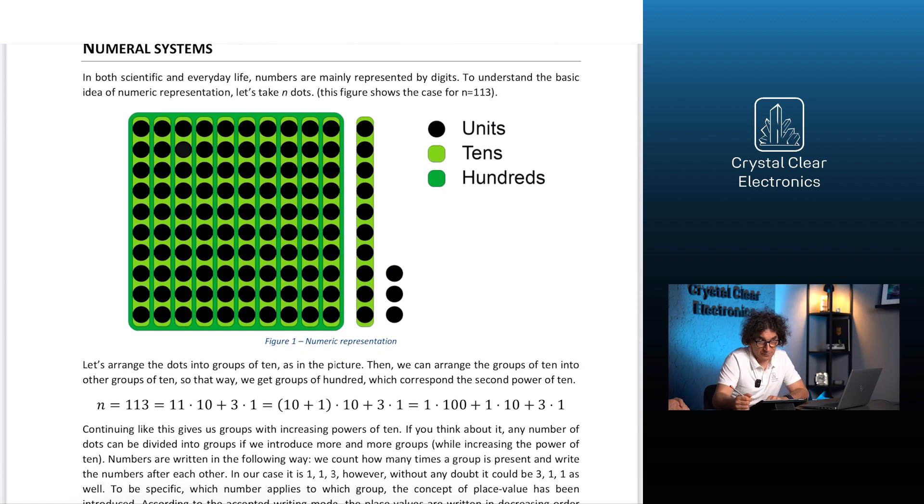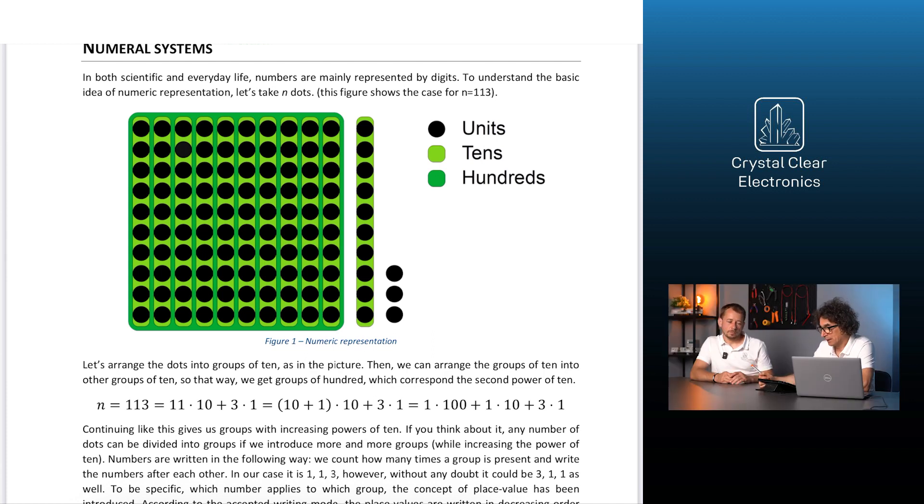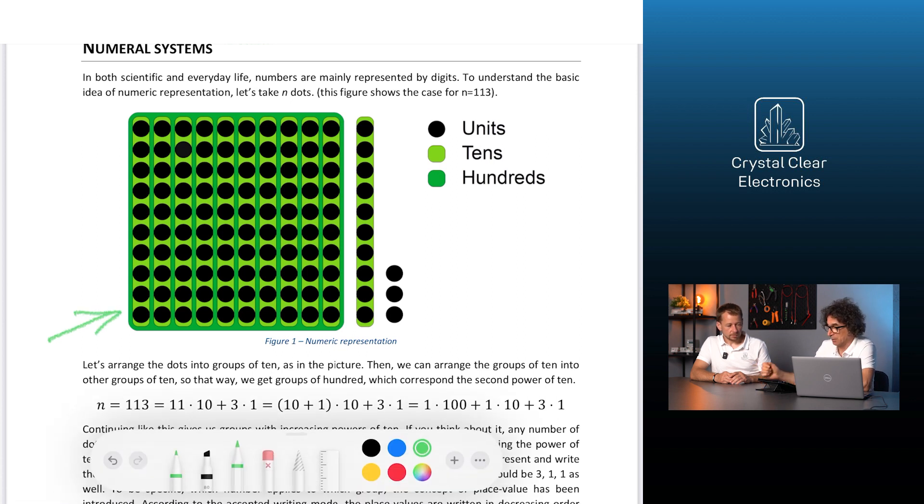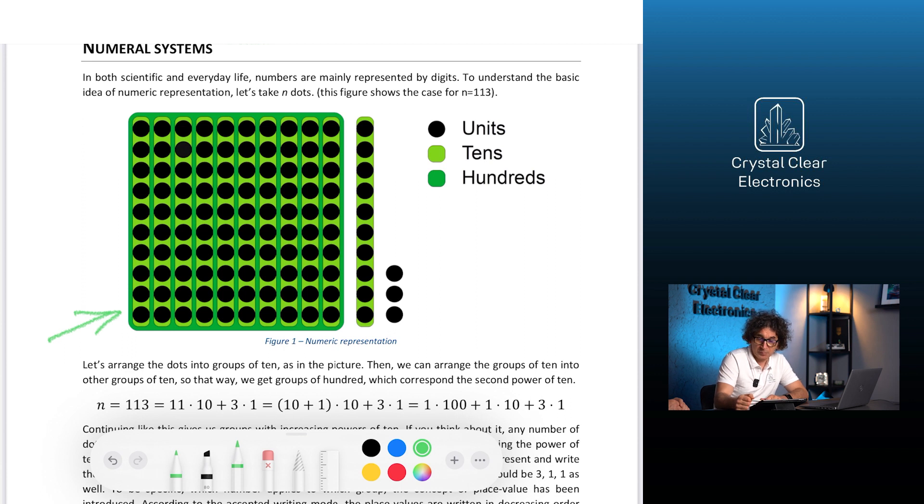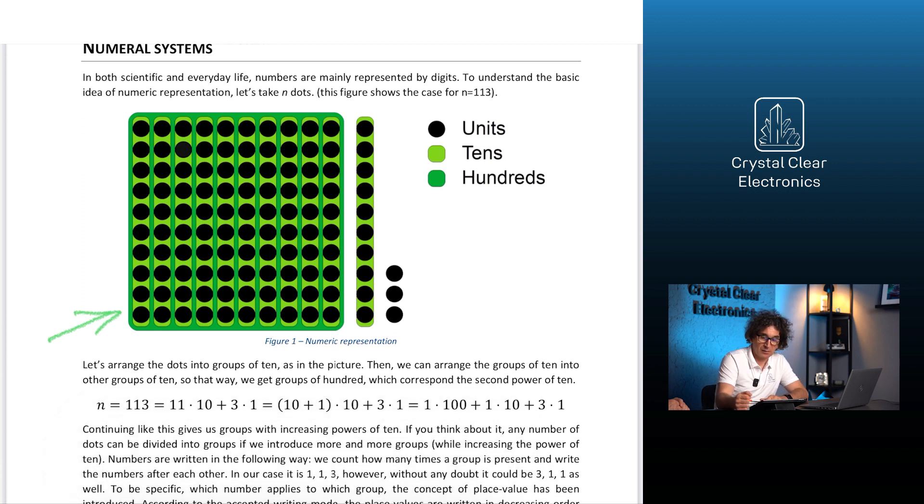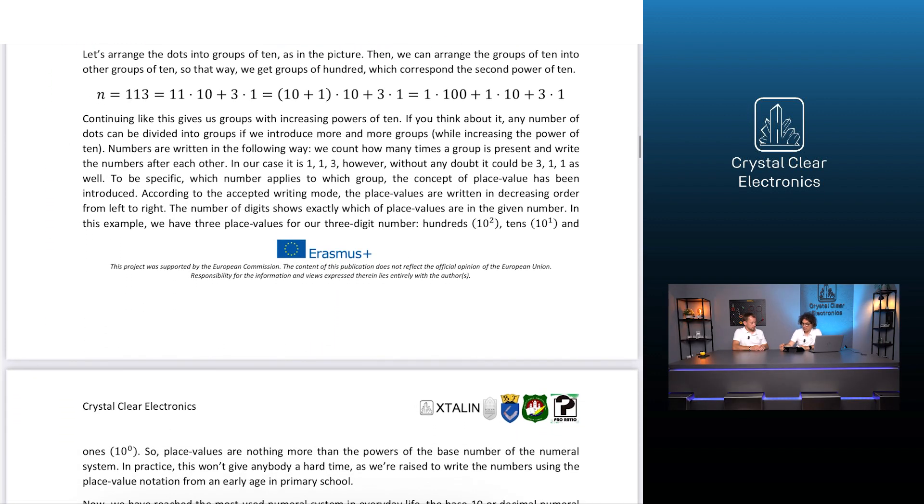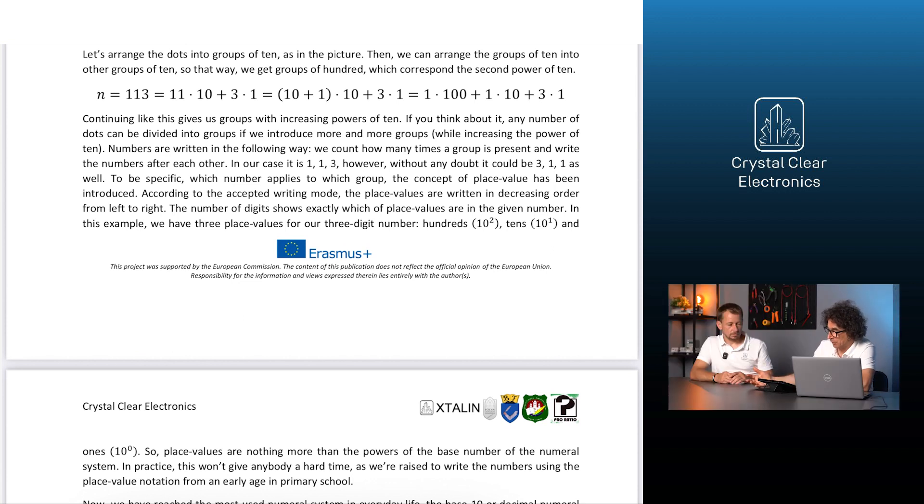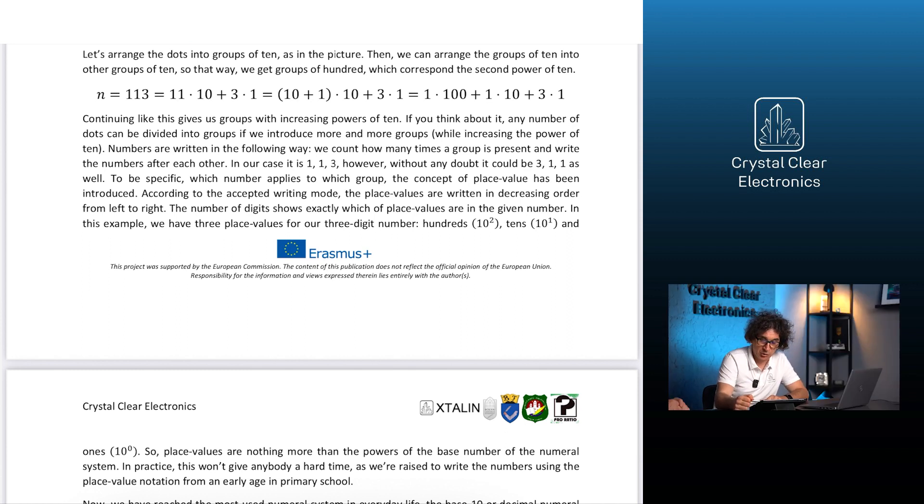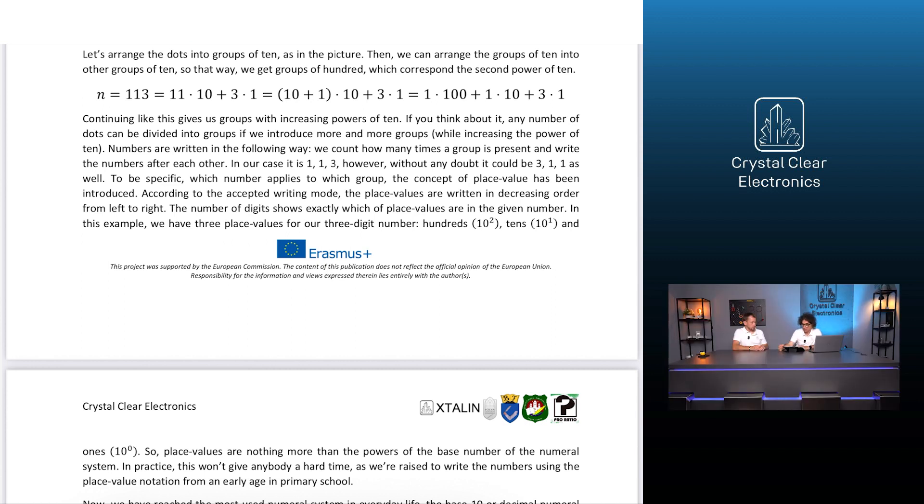Now let's look at numeral systems. Let's arrange the dots into groups of 10 as in the picture. Then we can arrange the groups of 10 into other groups of 10. So that way we get groups of 100 which correspond to the second power of 10. Continuing like this gives us groups with increasing powers of 10. If you think about it, any number of dots can be divided into groups if we introduce more and more groups while increasing the power of 10. Numbers are written in the following way. We count how many times a group is present and write the numbers after each other. In our case, it is 1 1 3.